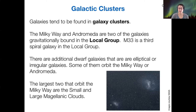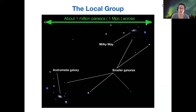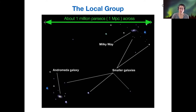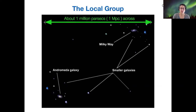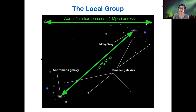A galaxy cluster can be a fairly busy place with galaxies. Here's a cartoon of our local group — the whole box is almost a megaparsec across. Here's the Milky Way; its dwarfs are relatively nearby. There are other smaller galaxies scattered between the Milky Way and Andromeda, and then Andromeda is down here on the lower left with its companions. The distance between the Milky Way and Andromeda is about three quarters of a megaparsec.